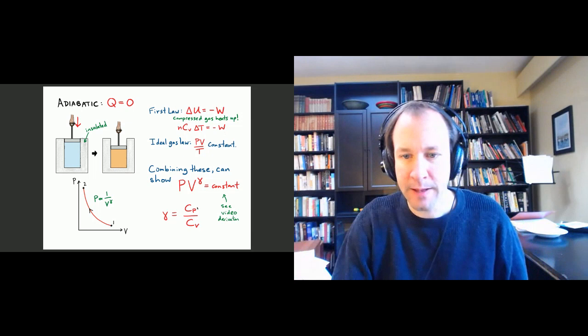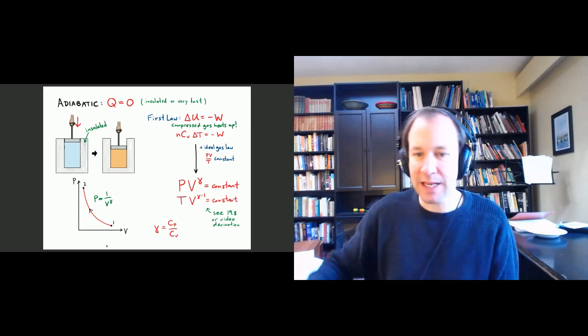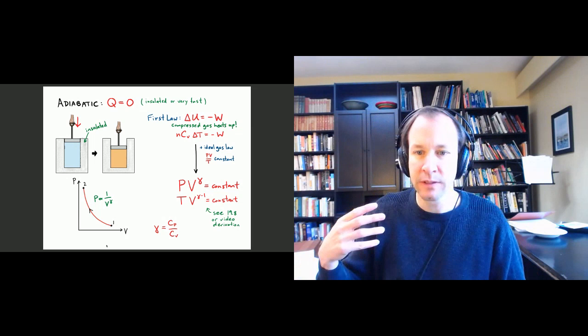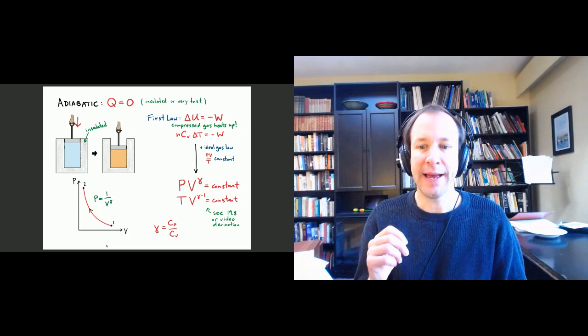There are two relations that are going to be useful in predicting pressures, volumes, and temperatures in adiabatic processes. I have an entire video that was in the reading assignment that you can watch, and I'll place a link below. If you want to see the detailed derivation, you can watch those videos. But first, what do these equations mean?